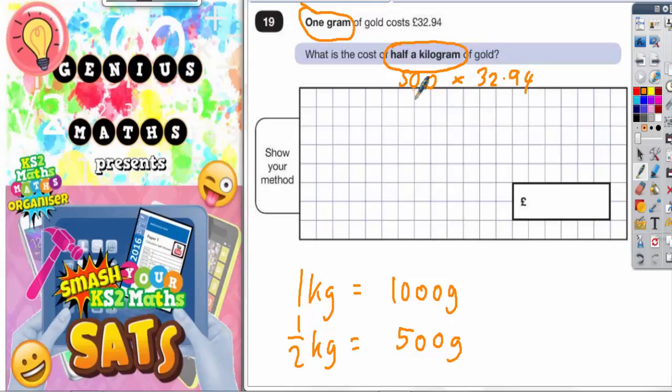Now, seeing as we've got two zeros on this 500, what it might be easier to do is to times our £32.94 by 5. So if we times it by 5, let's see where that takes us.